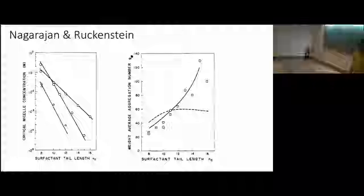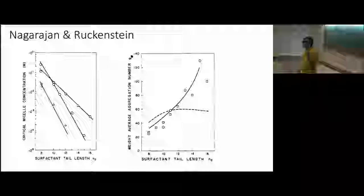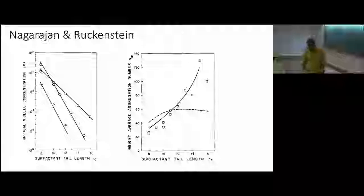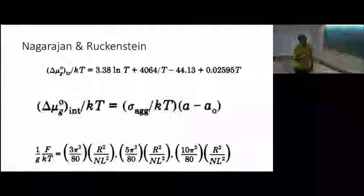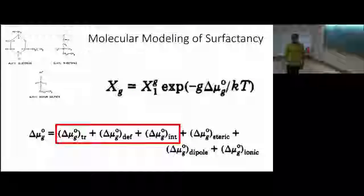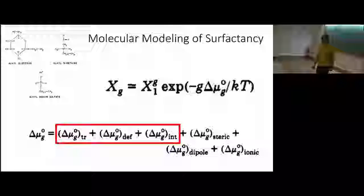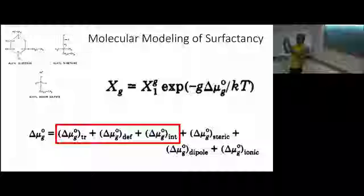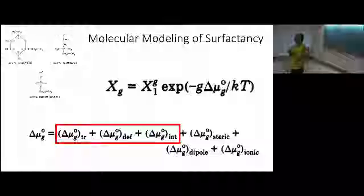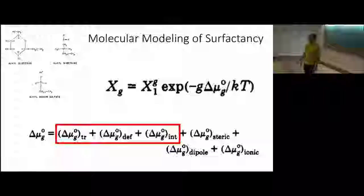Somebody asked me about shape fluctuations of these micelles. Given this theory, how would I start to think about shape fluctuations? Shape fluctuations — you start with a micelle like this, you can imagine it distorting. One possibility is the overall shape distorts, and another is the surface itself distorts. How would you start to quantify things like that?